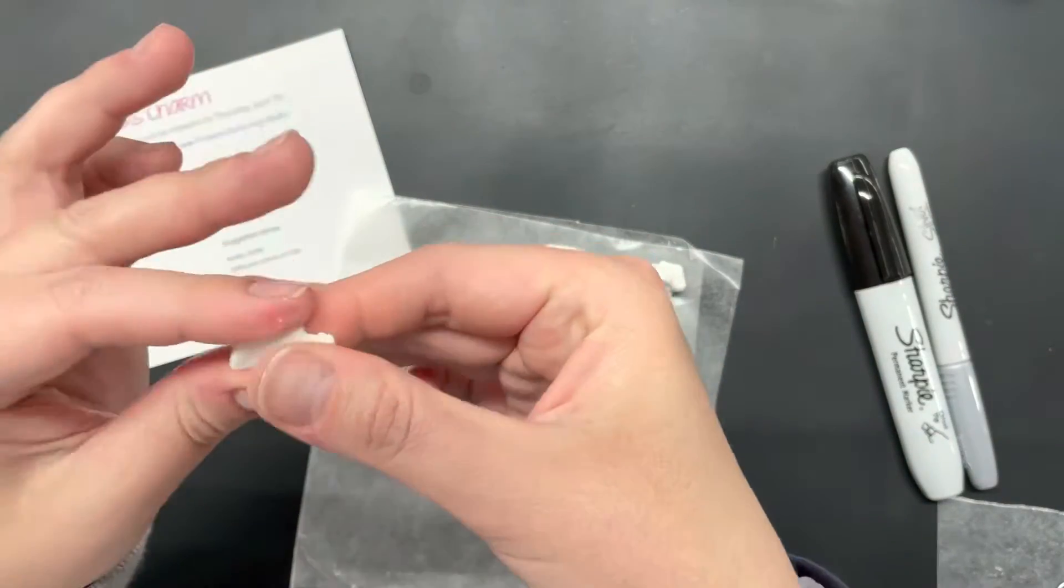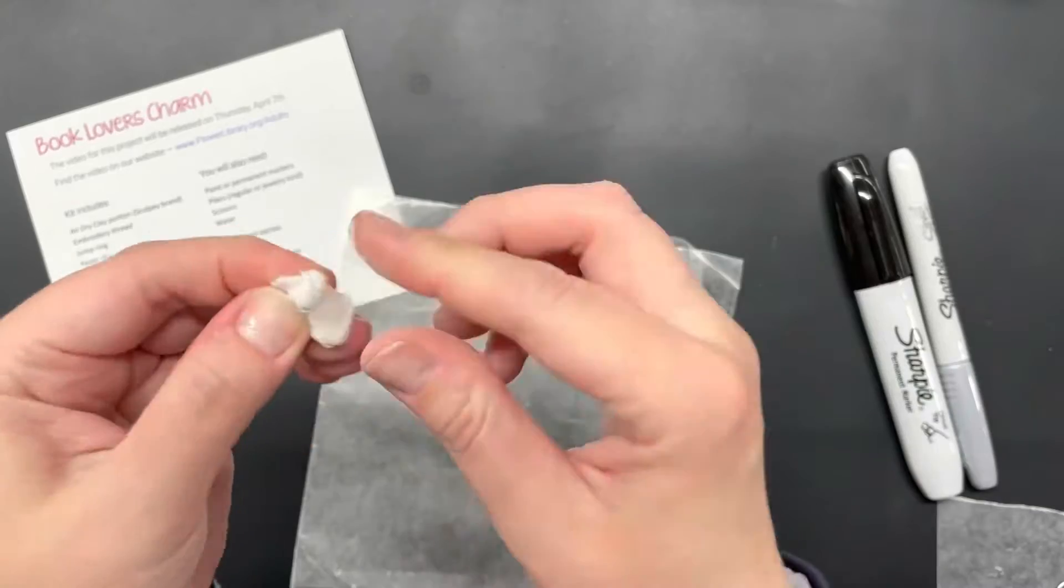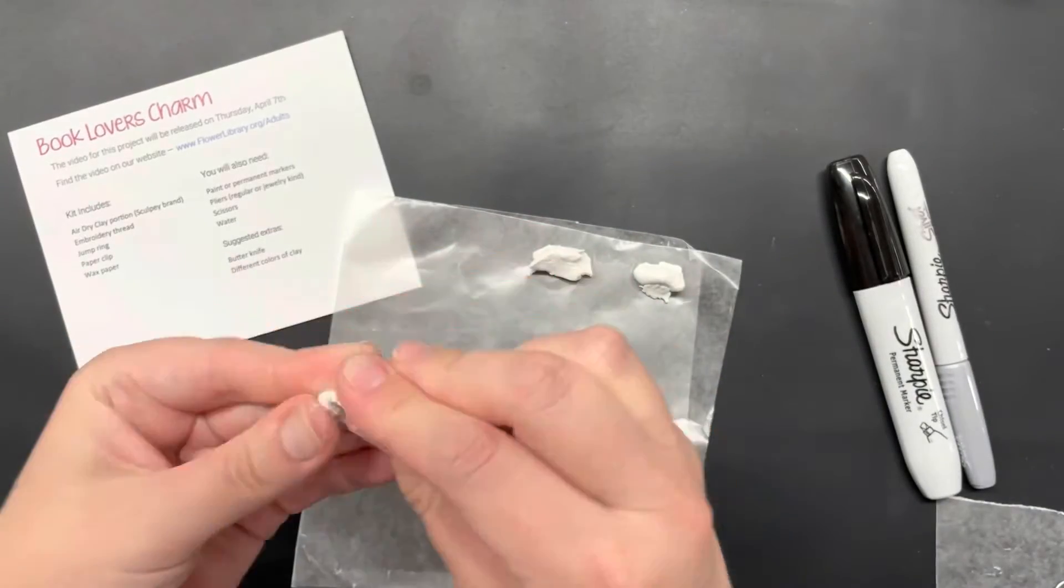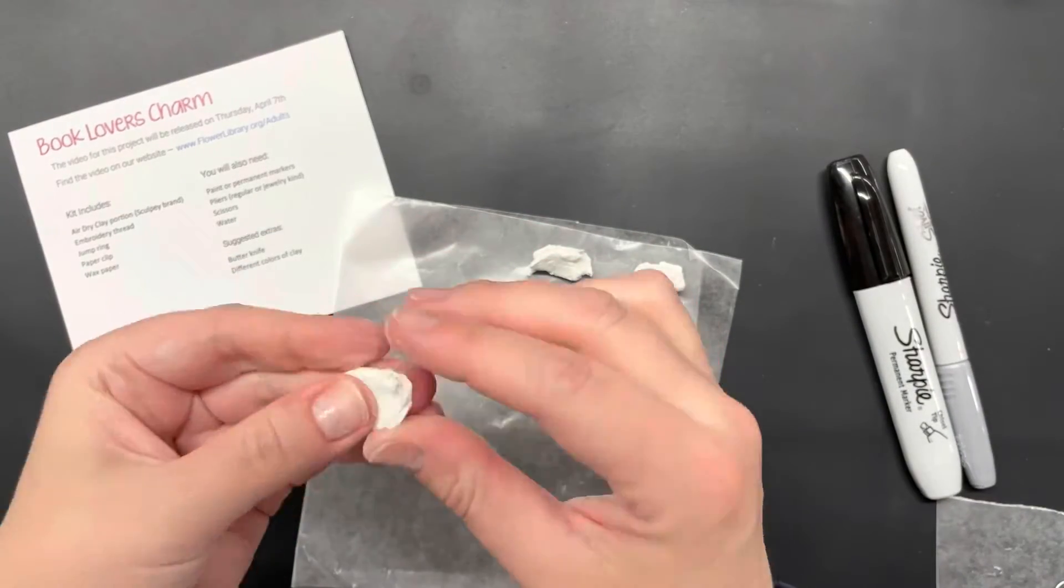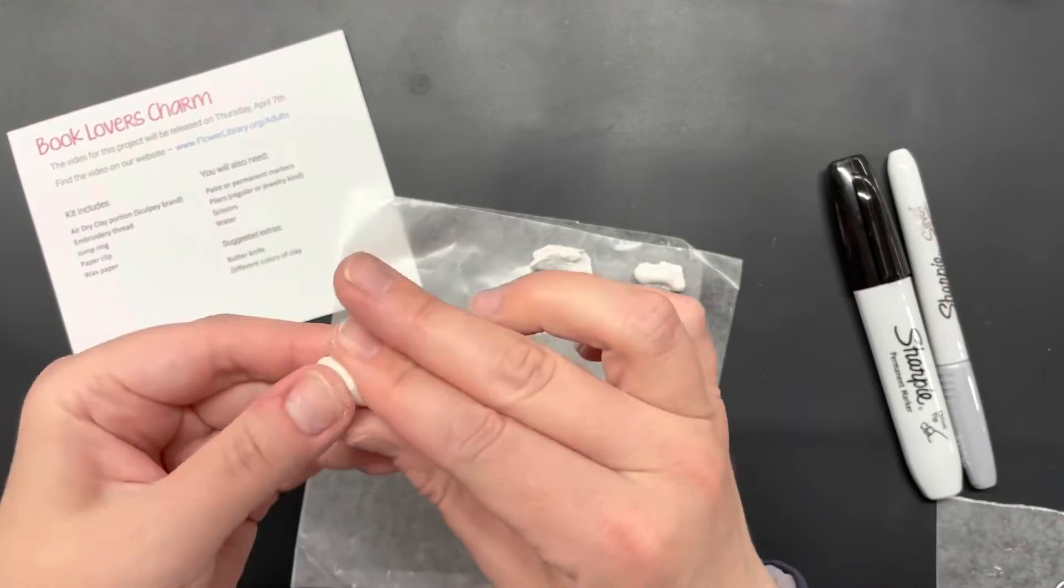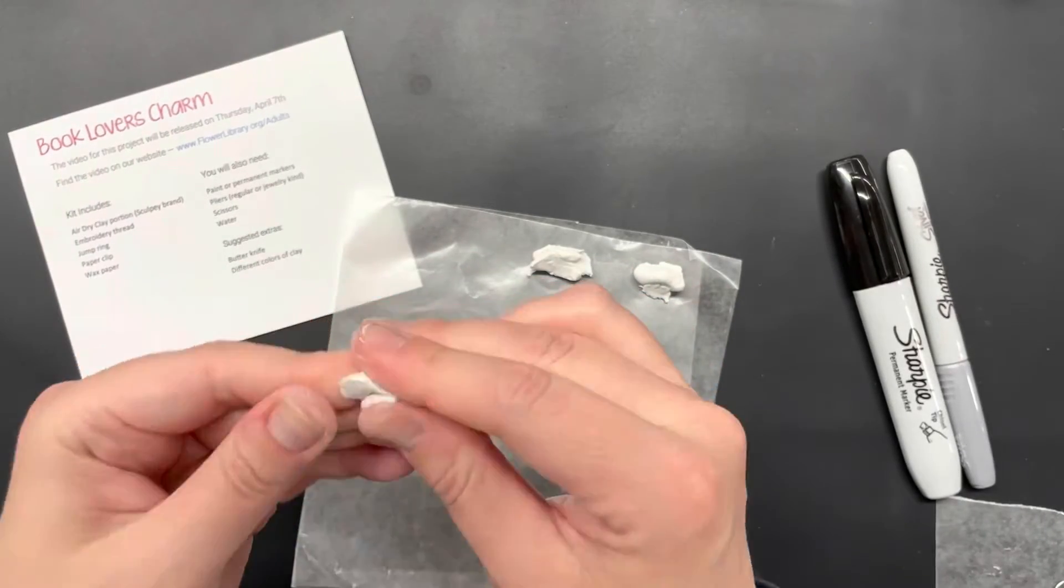So I started by making a rectangle shape and then just giving it a little bit of kneading. This just helps blend the dough, warm it up a little bit to make it easier to work with.